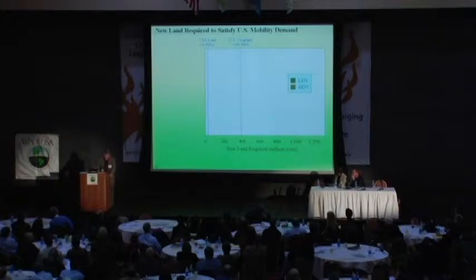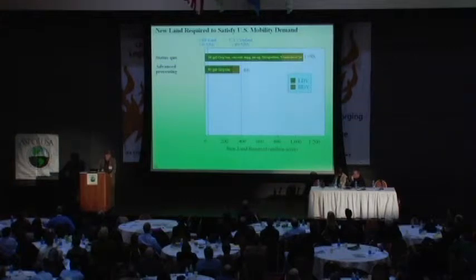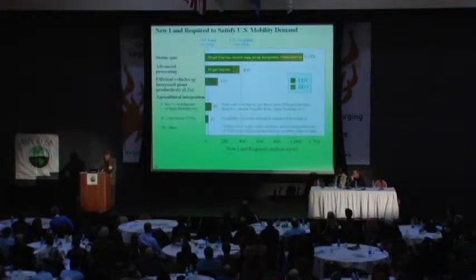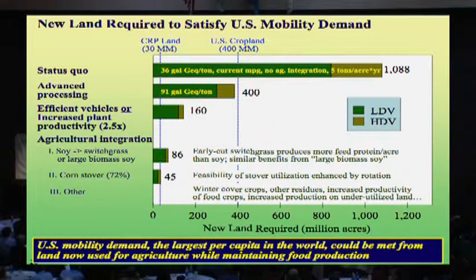At least as an analytical exercise, we can reproduce the ranges of these estimates rather than showing just one more point estimate. In a status quo scenario, you need over a billion acres to meet current light-duty vehicle demand. Advanced processing lowers that. Efficient vehicles and increased plant productivity lower it further. And from a combination of strategies involving integration into agriculture, you can get down very close to zero new land required for this very large demand for energy services.